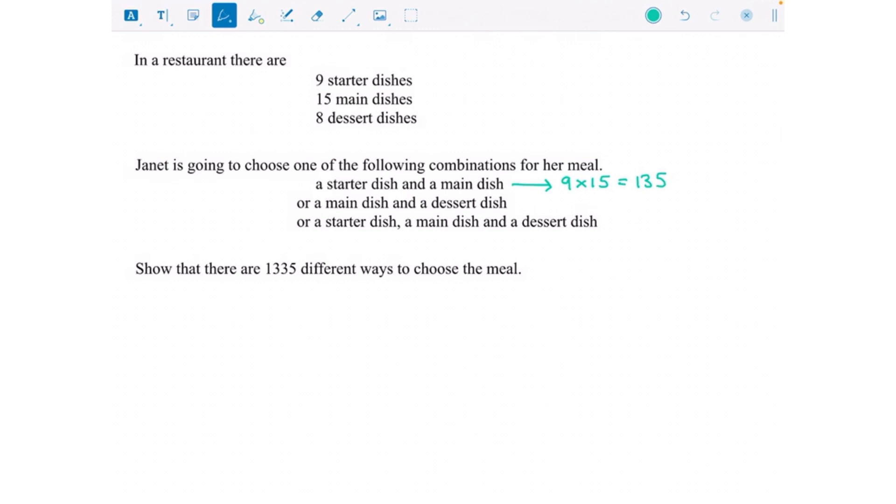So that's how many different options she's got if she's just having a starter followed by a main. Then we've got a main followed by a dessert. Now there are fifteen mains and we're going to multiply that by the number of dessert options we've got, and that is 120.